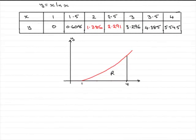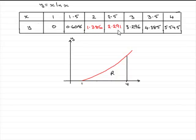In this question, we're given a particular table and we've got to fill in the values for y when x is 2 and 2.5, which you'll see I've done. All you've got to do is simply substitute x equals 2 into y equals x natural log x. These are the two answers you should get. Remember you've got to round them to three decimal places.